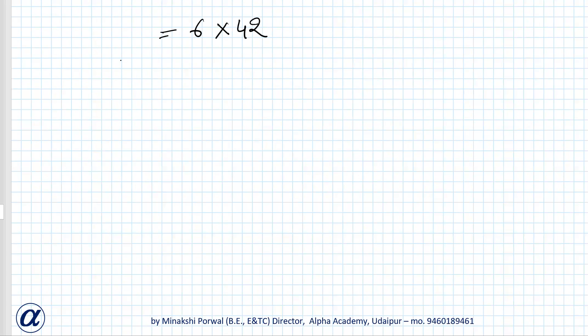So that is BC square. BC square can be written as 42 can be written as 6 times 7. So BC is 6 root 7 meters.